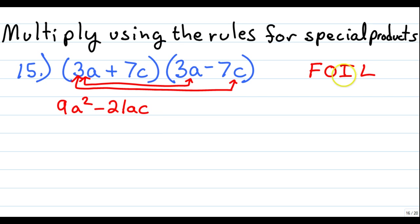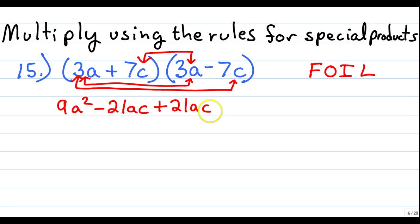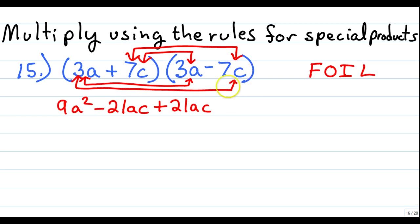I stands for the inner two terms: 7c and 3a — they're to the inside. Positive 7 times positive 3 gives plus 21ac. L stands for the last terms: the last term in the first binomial is 7c, and the last term in the second is negative 7c. Positive 7 times negative 7 gives negative 49c squared.